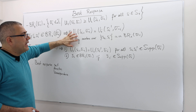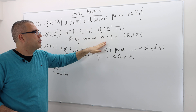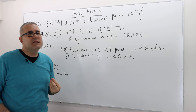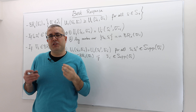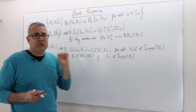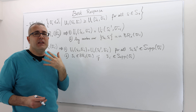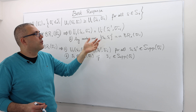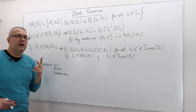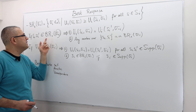What else? Any mixed strategy that puts positive probabilities on only s_i and s_i' is also a best response. Why? The payoff of a mixed strategy is a convex combination — a weighted average. If the payoffs of s_i and s_i' are the same, any mixed strategy putting positive weights only on those two will have expected payoff equal to those values, and therefore it is also a best response. So if there are two pure strategies that are best responses, there are actually infinitely many mixed strategies in the best response set.